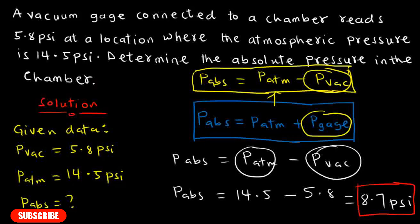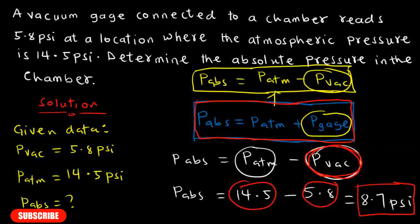This is how to approach this kind of question. You have to know the relation between absolute pressure, atmospheric pressure, and gauge pressure. Gauge pressure can be positive or negative, and the negative gauge pressure is the same as the vacuum pressure. Once you know this, you just substitute to get your answer.